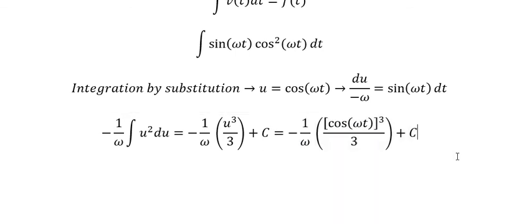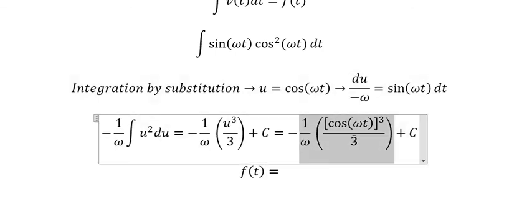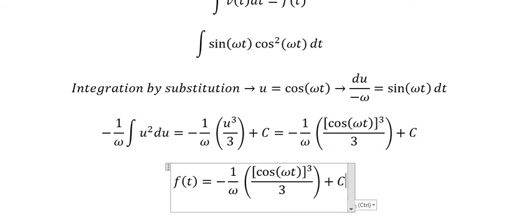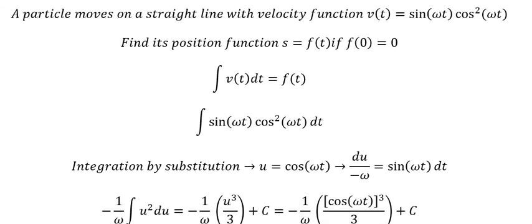So we have f(t) = −(1/ω)([cos(ωt)]³/3) + C. But we have the initial condition f(0) = 0.